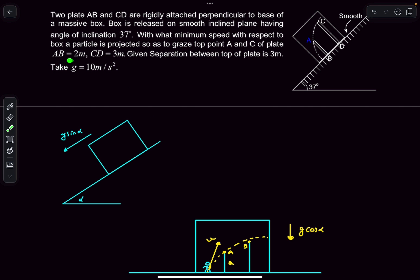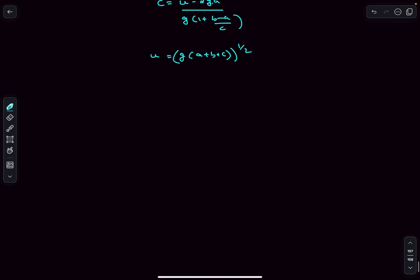Length of first plate is 2 meters, length of second plate is 3 meters, and the separation between the tops is 3 meters. So 2, 3, 3 - a plus b plus c comes out to be 8. Now the effective gravity in this media is g cos alpha.